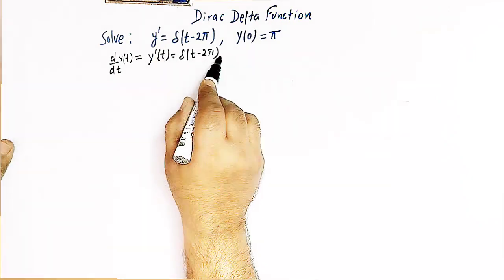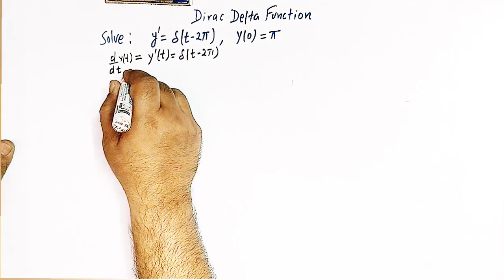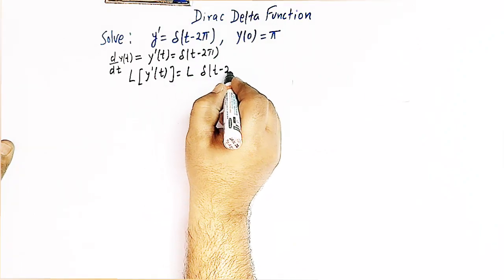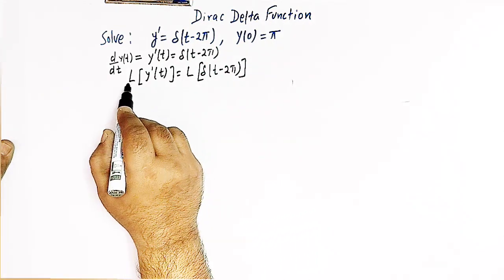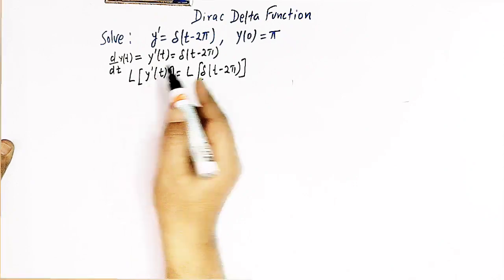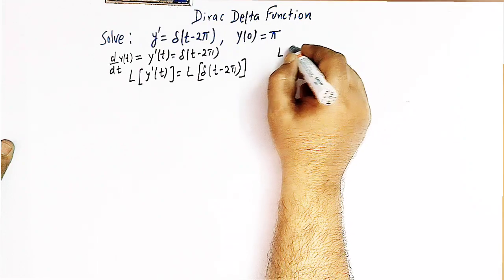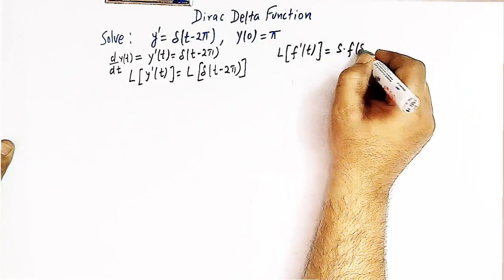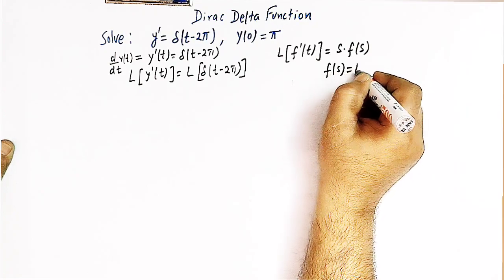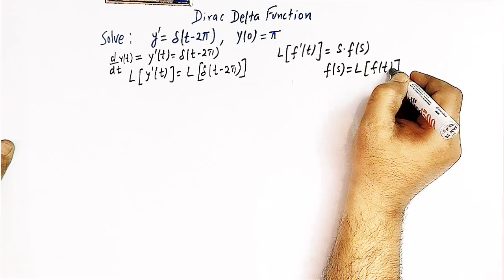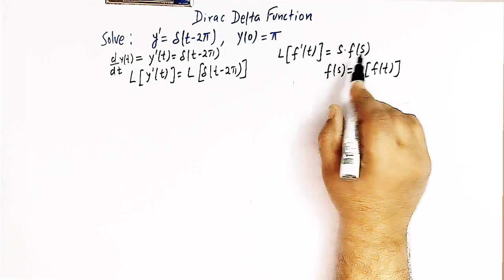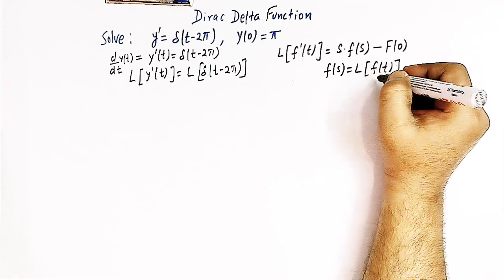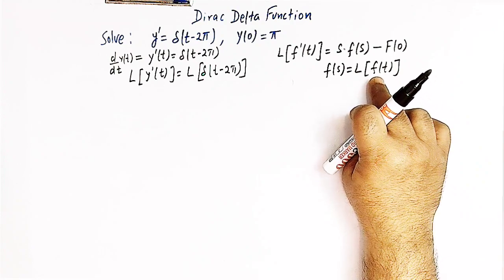Now let us take the Laplace transform of both sides: L{y'(t)} = L{δ(t − 2π)}. To find the Laplace transform of the derivative of a function, we use the result that L{f'(t)} = s·F(s) − f(0), where F(s) is the Laplace transform of f(t) and f(0) is the value of the function at t = 0.